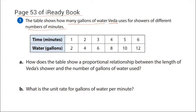So it says, how does the table show a proportional relationship between the length of the shower and the number of gallons used? Okay, there are a couple ways that you could answer this. Let's look at every single one of these as a fraction.